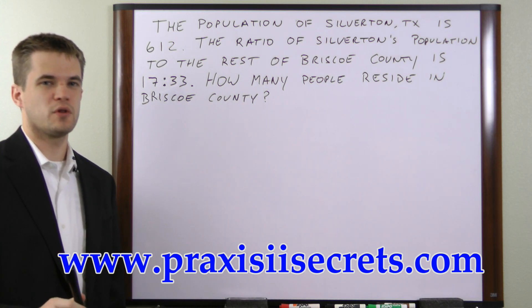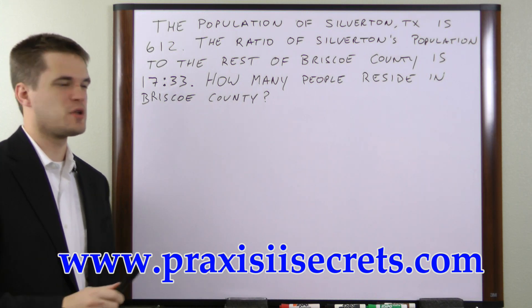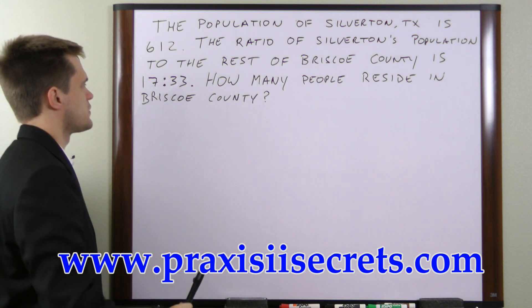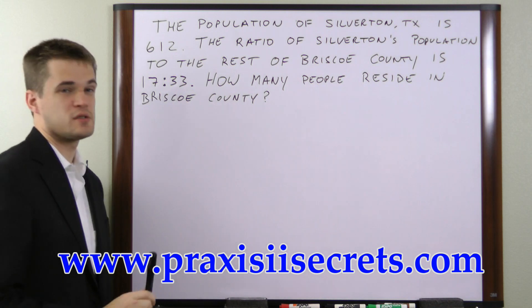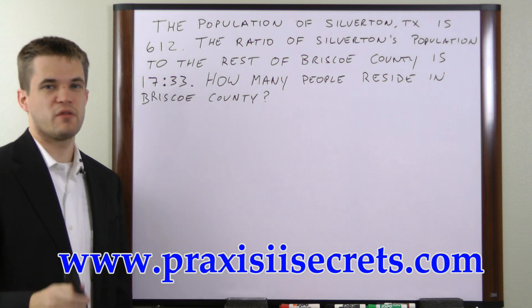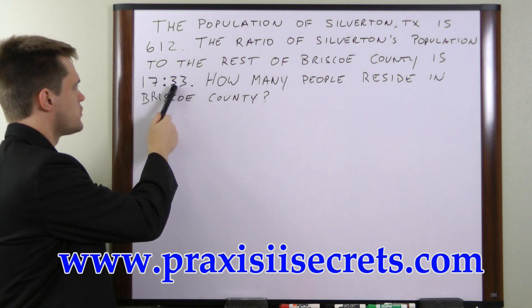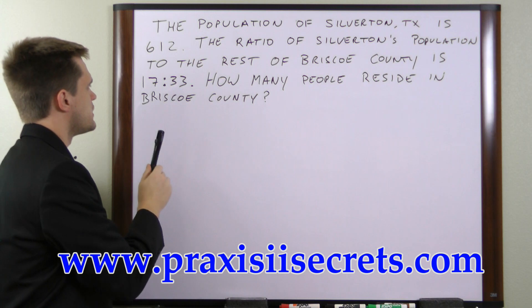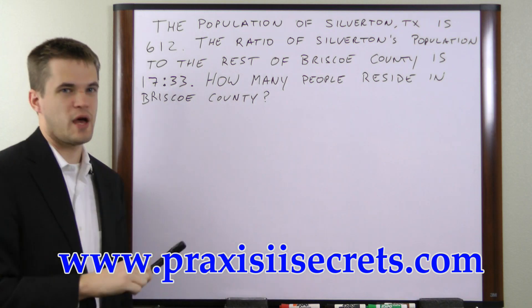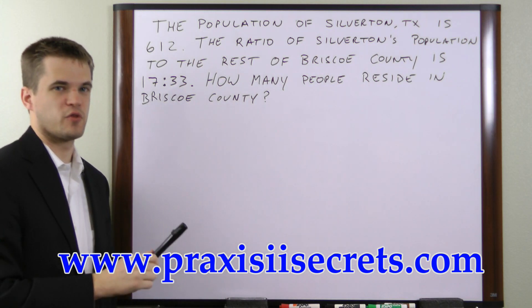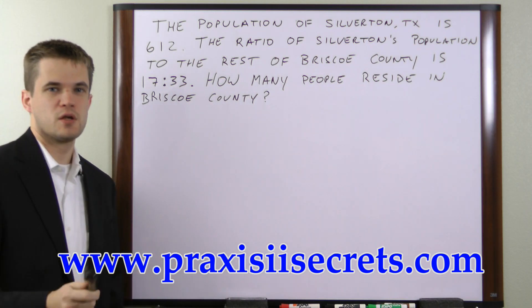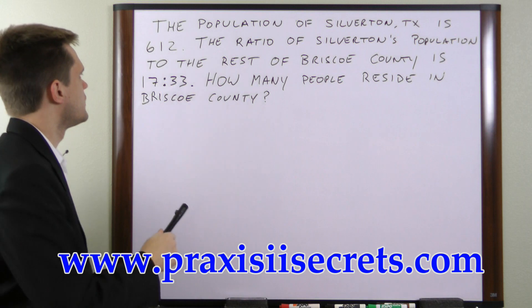That will tell us how many people each one in the ratio represents. And once we have that number, we'll add these two ratio numbers together and then multiply that number by the number of people that each one represents. So let's do that.